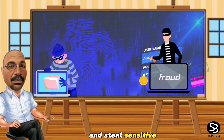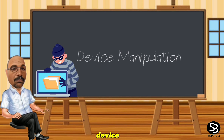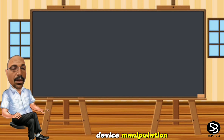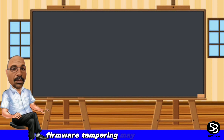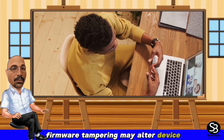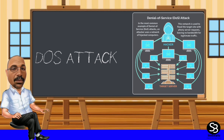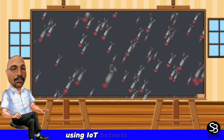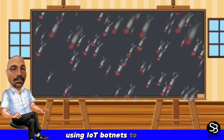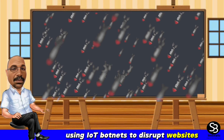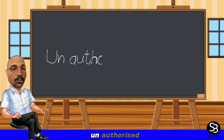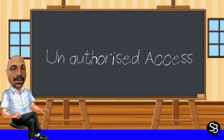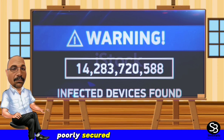Data theft: Hackers can access vulnerable IoT devices and steal sensitive data. Device manipulation: Firmware tampering may alter device behavior. Denial of service: Coordinated assaults using IoT botnets to disrupt websites.